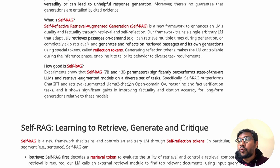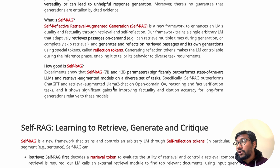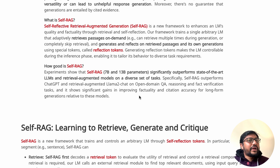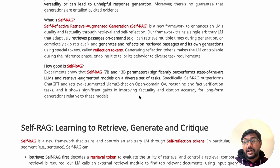Overall, Self-RAG is quite amazing — the model learns to retrieve, generate, and critique itself through self-reflection. The experiments show that Self-RAG 7B and 13B outperform state-of-the-art large language models and RAG models including ChatGPT and RAG-enabled LLaMA 2 and Alpaca across a bunch of tasks. I'm still somewhat skeptical about efficiency in a production setup, but I'd love to hear your thoughts in the comments. See you in another video — happy prompting!